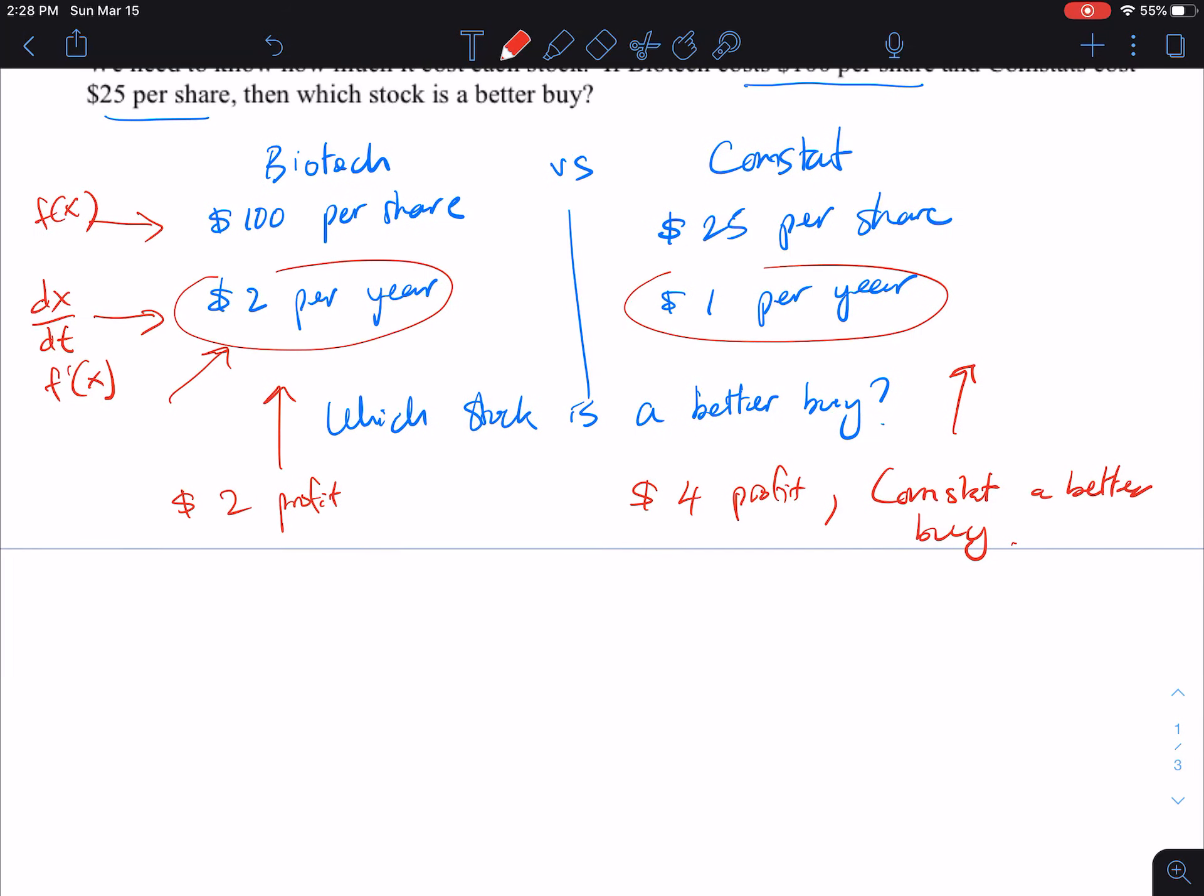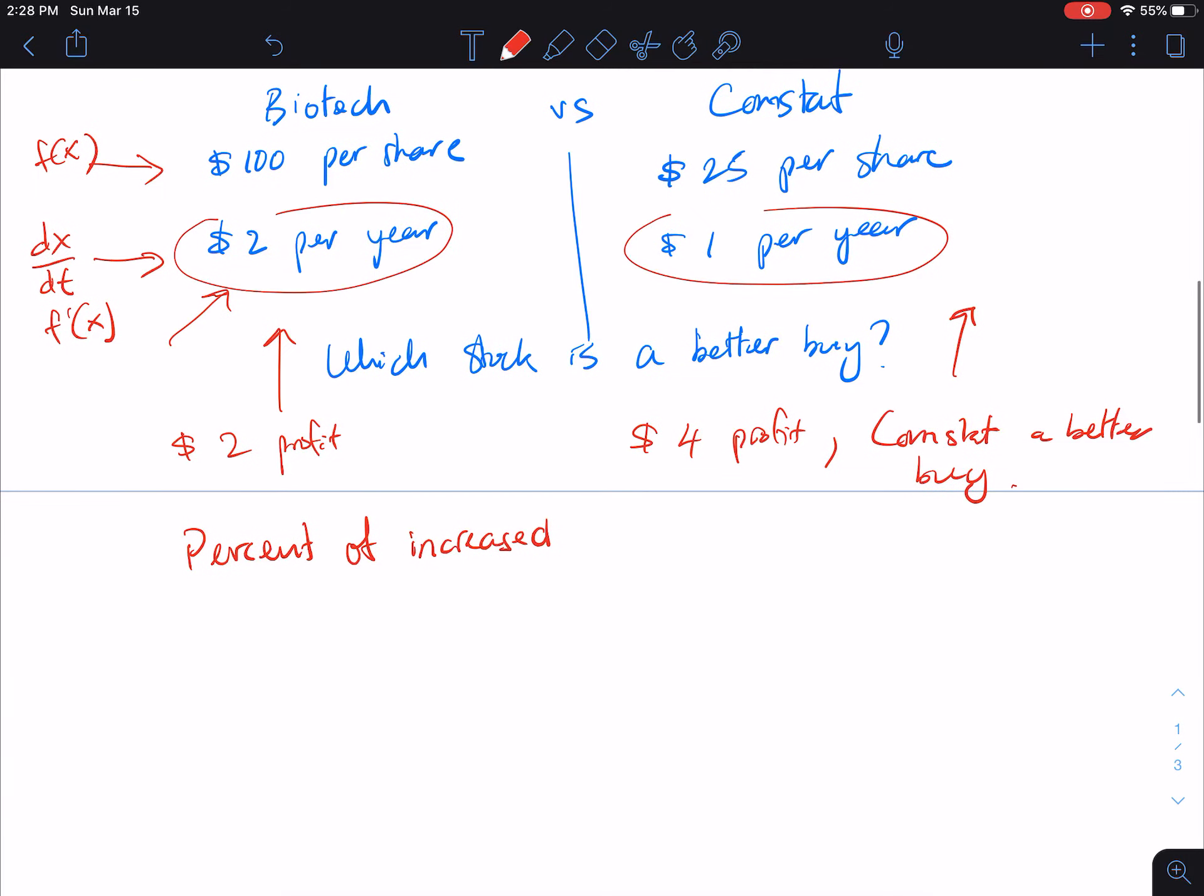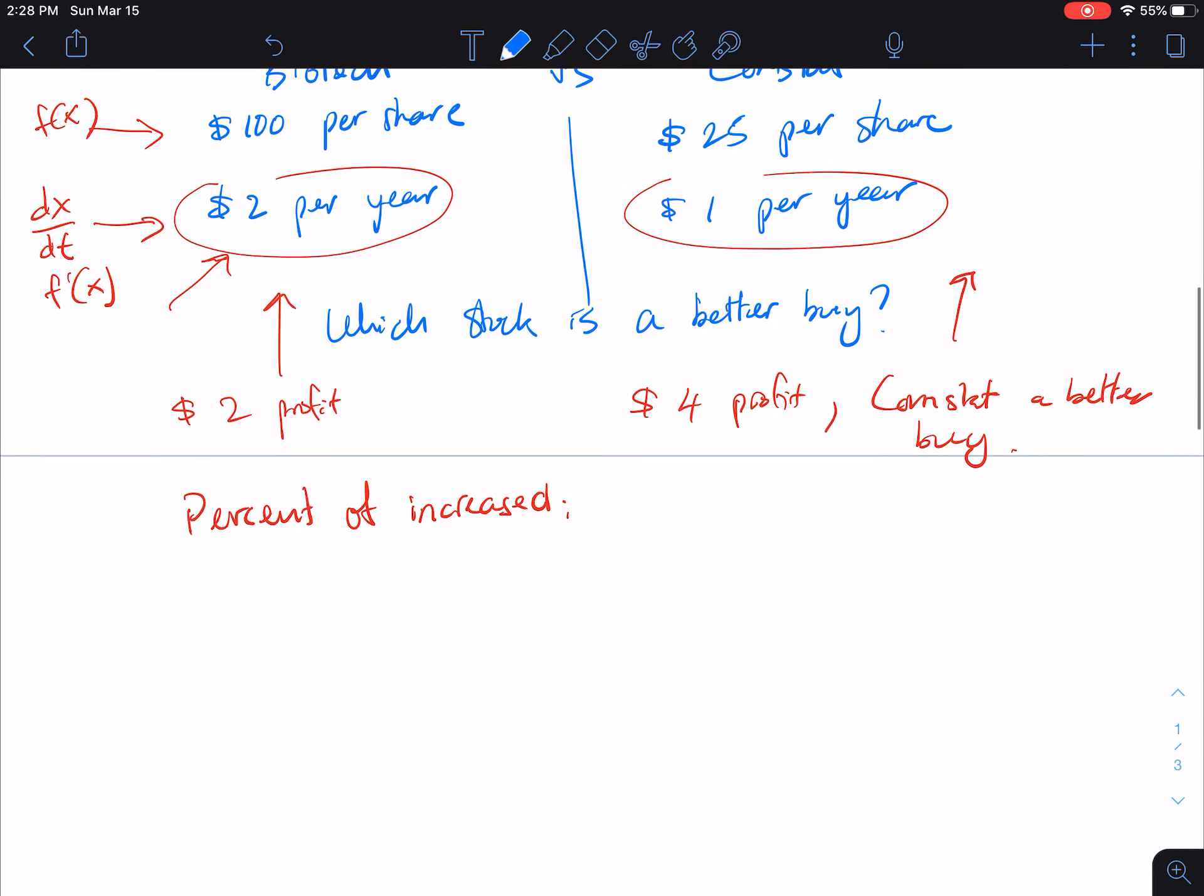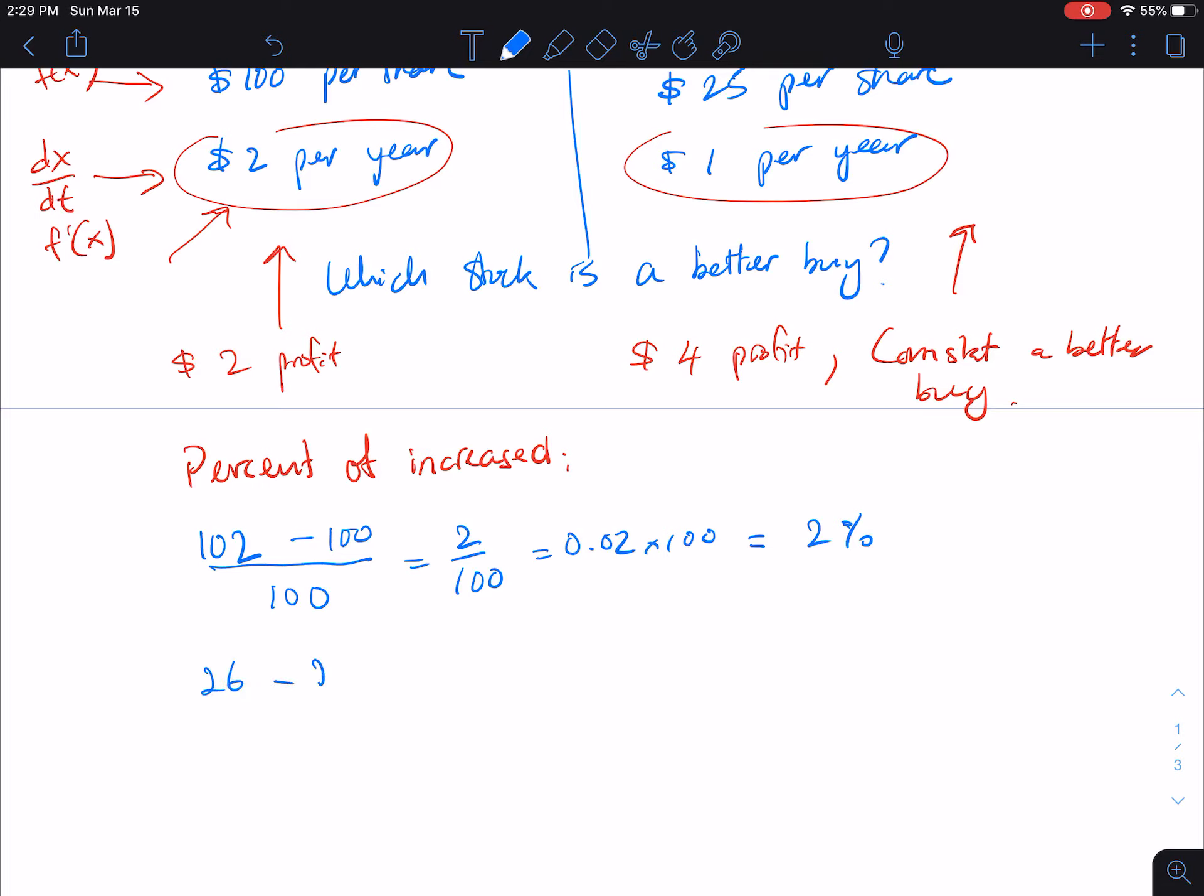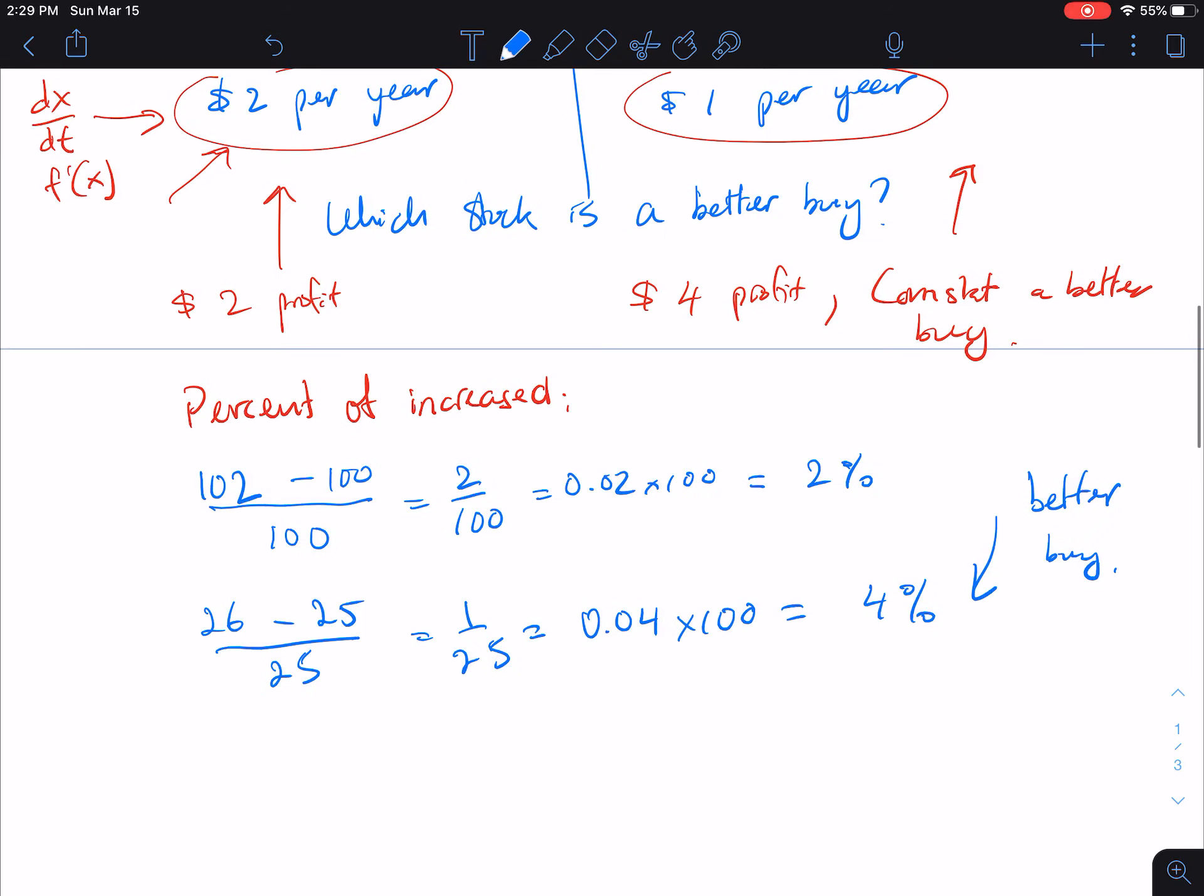To compute how much the stock increases per year, another way I look at this is percent of increase. This is what we learned before taking this class. We take the increased value or new value that has been increased by $2, subtract the starting value, and divide by the original value. That gives us $2 over 100, which is 0.02 times 100, giving us a 2% increase per year. For Comstat, $26 minus $25 over 25 is 1 over 25, which is 0.04 or 4% increase per year. Of course, this is the better buy.